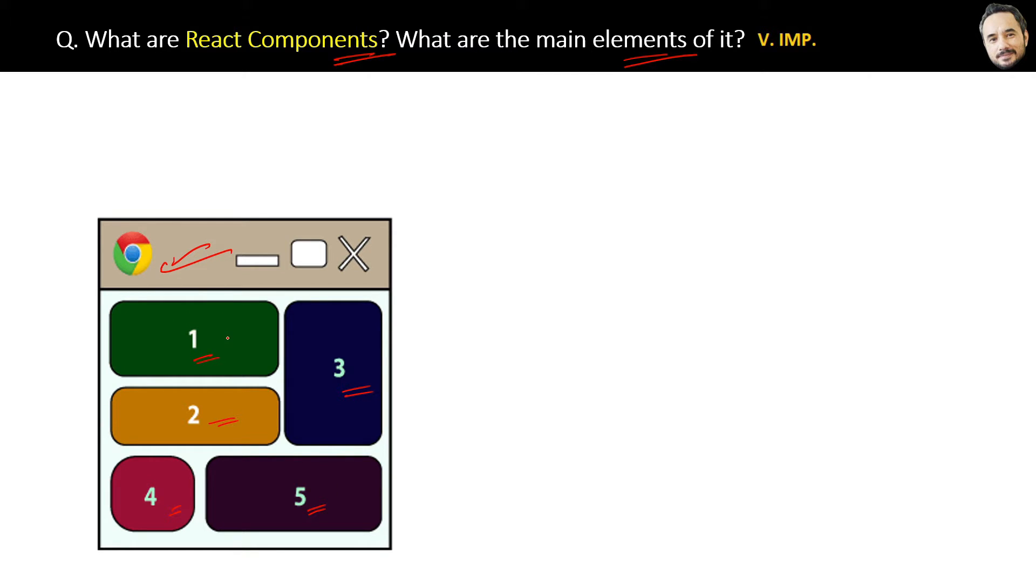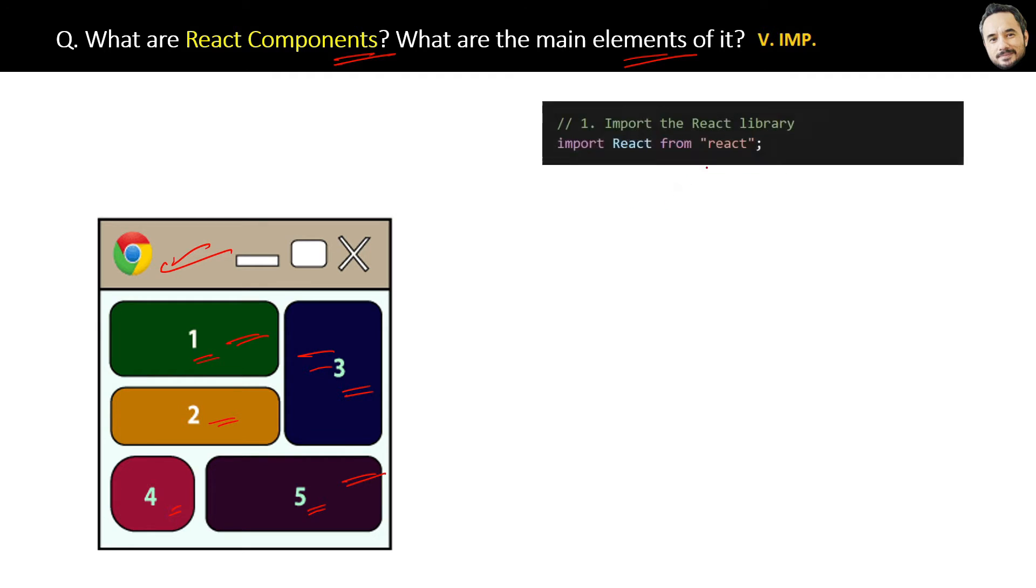Maybe this is the header component, this is the menu, footer—depending on the application. These are the building blocks of your web page, and we call them components. Here is the code structure of a very simple React component.